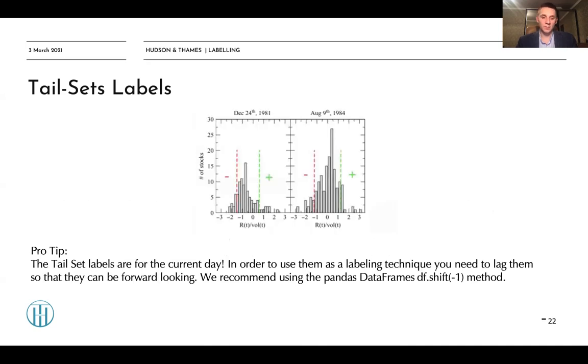So as we can see on this graph here, what tail sets labeling does is that they create the distribution of your returns based on the returns of your investment universe. Here we use the volatility adjusted returns. We rank them. We find the top, for example, five-quantile, bottom five-quantile. Everything which is more than the top five-quantile has a label value of one. Everything which has a bottom quantile has the label value of minus one. And based on that, we can train various long-short or factor type of portfolios.